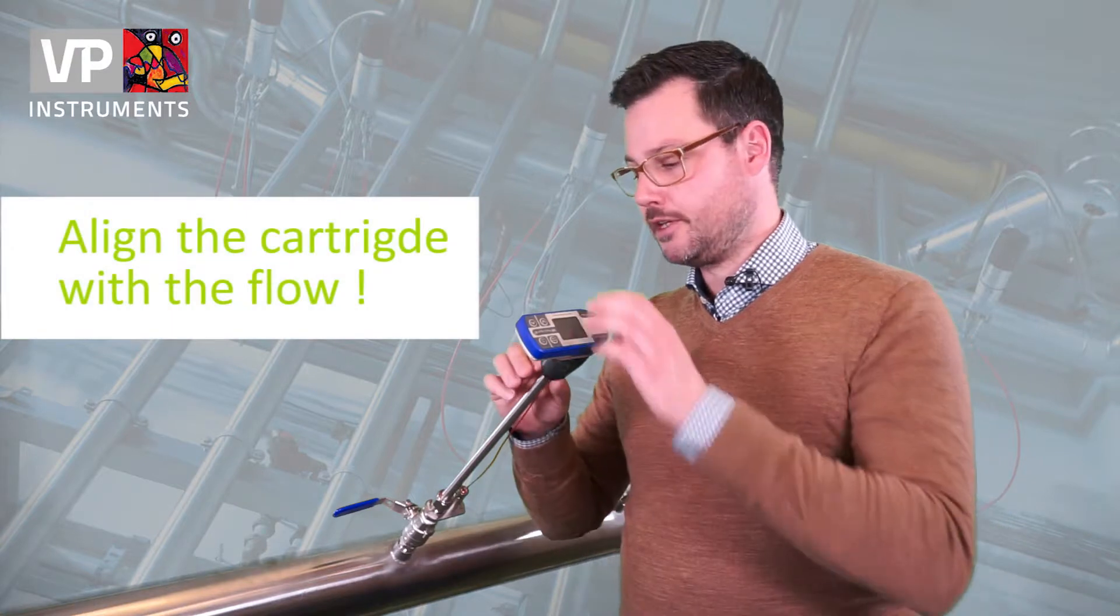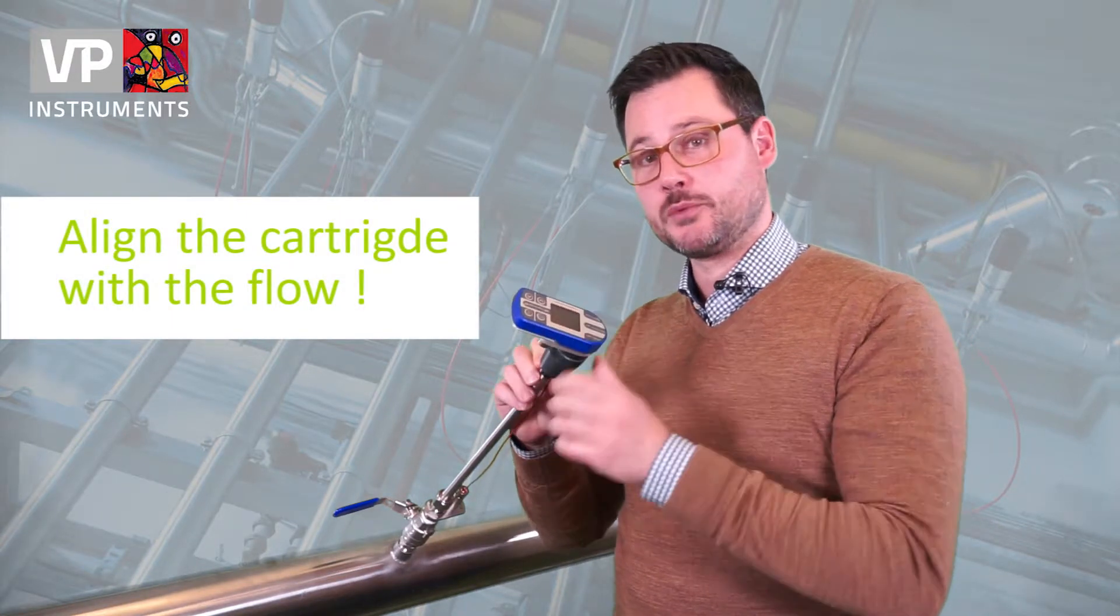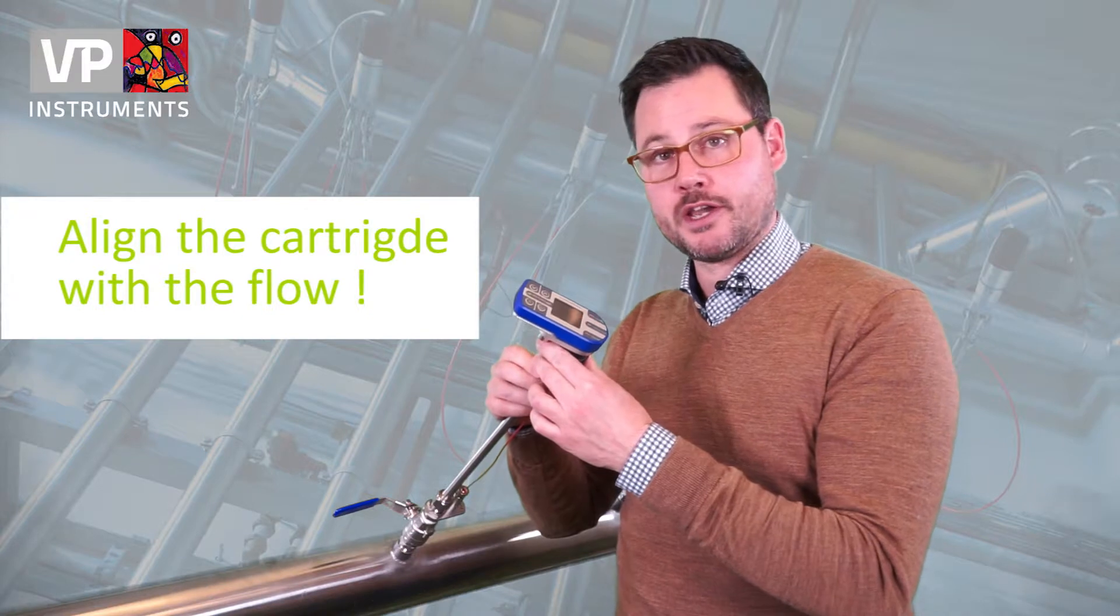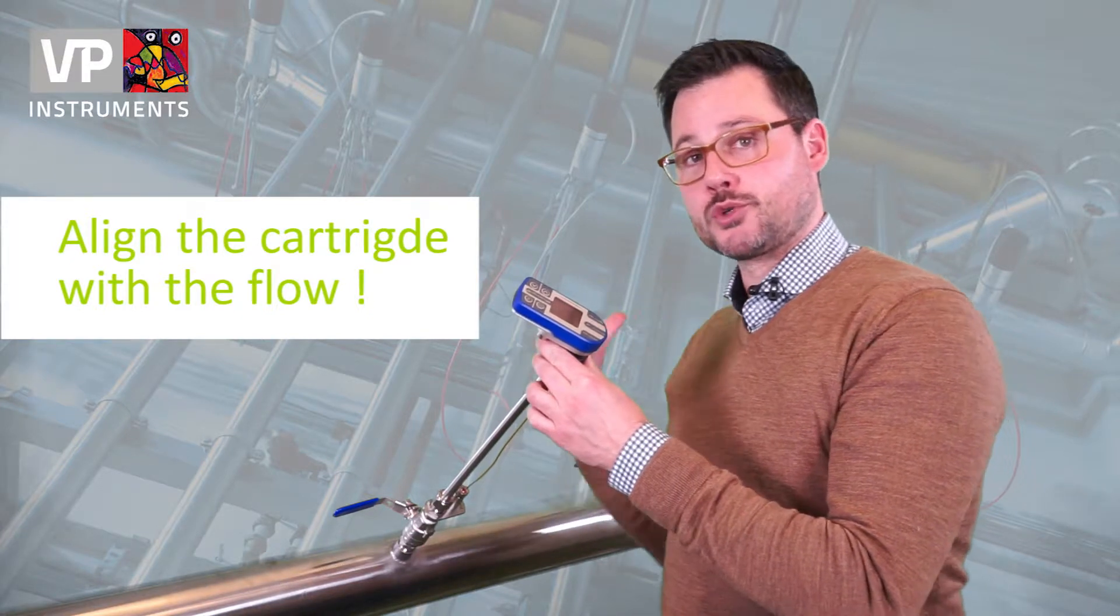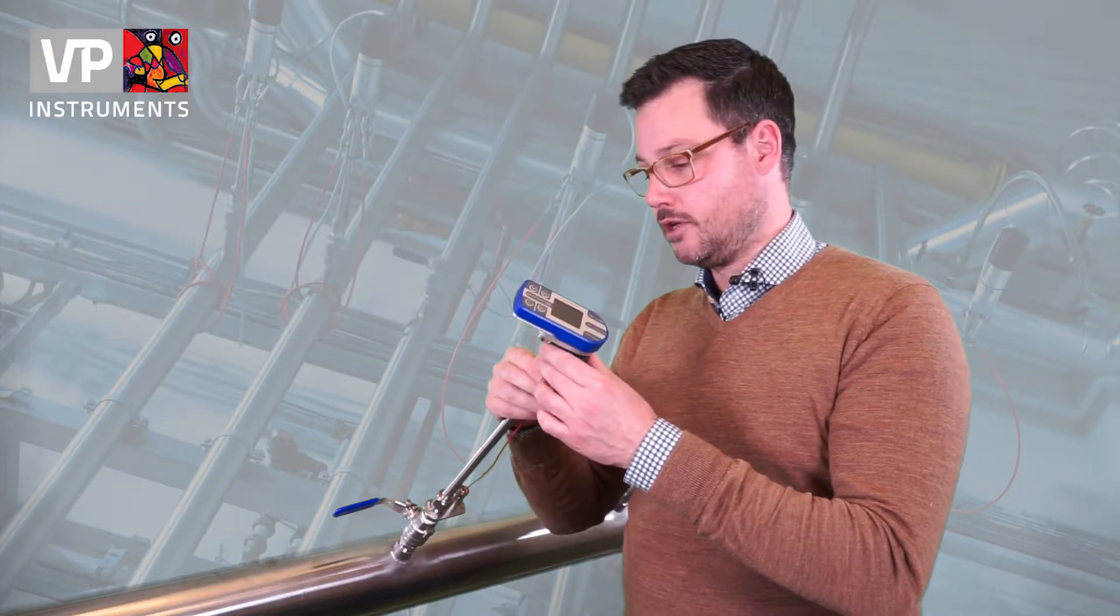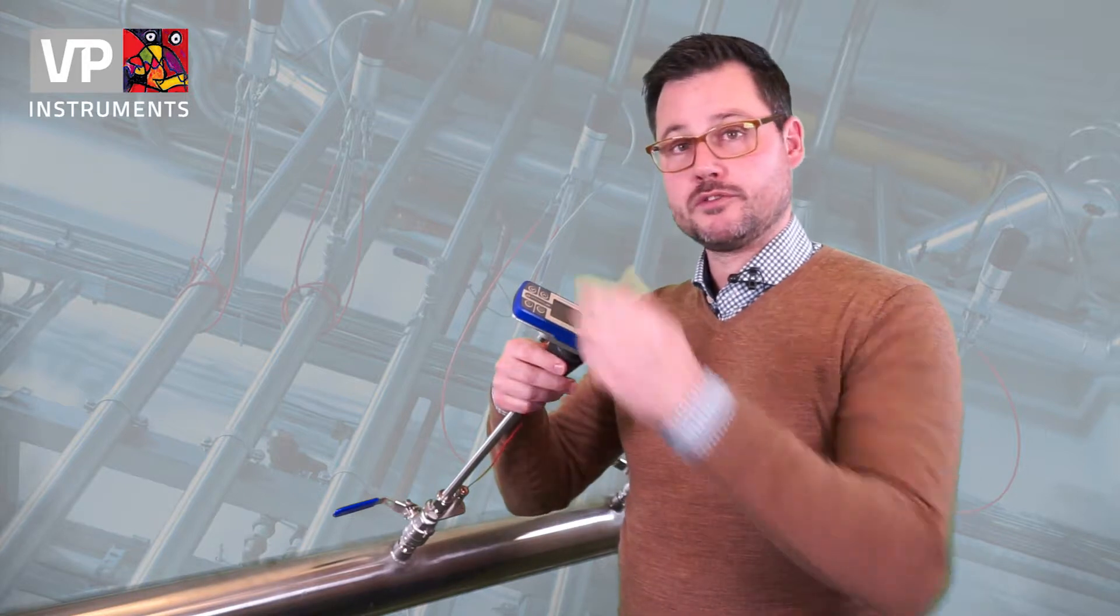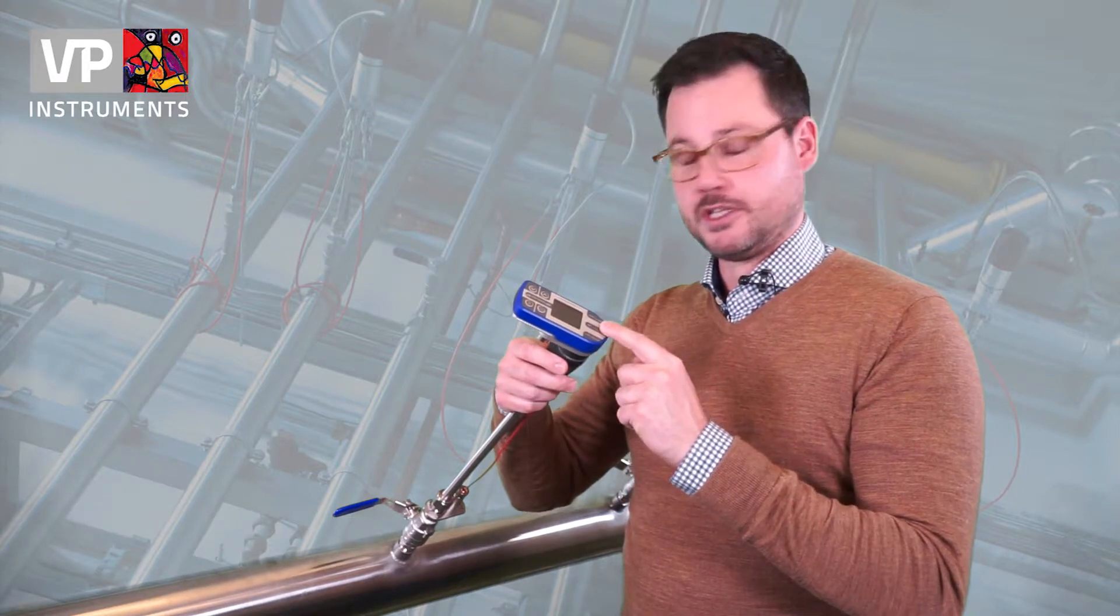Next step is to make sure that the sensor cartridge is aligned with the flow. It has a flow indicator and it needs to show downstream of the pipe. I've aligned it, but now my transmitter orientation is still not correct.